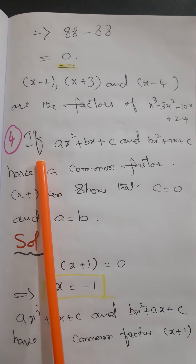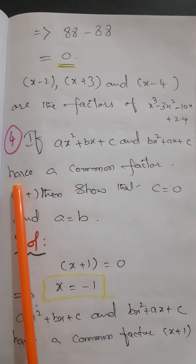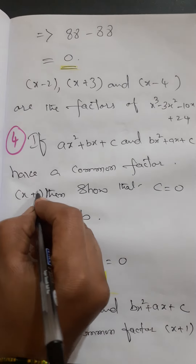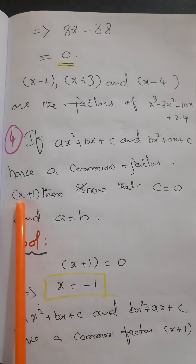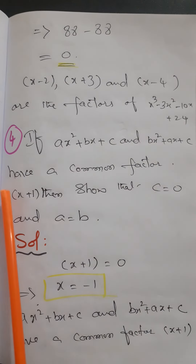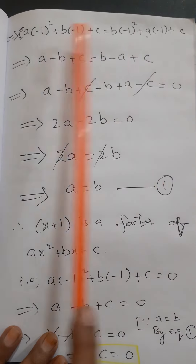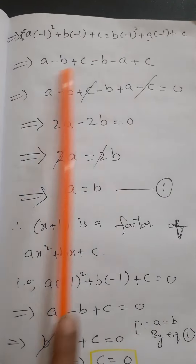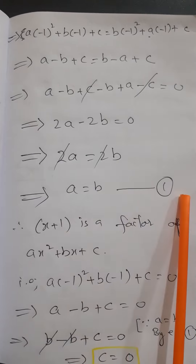Question 4: If ax² + bx + c and bx² + ax + c have a common factor x + 1, show that c = 0 and a = b. Since x + 1 is a common factor, x + 1 = 0 gives x = -1. Substituting x = -1 into both functions and equating them, we get 2a = 2b, so a = b. This is equation (1).